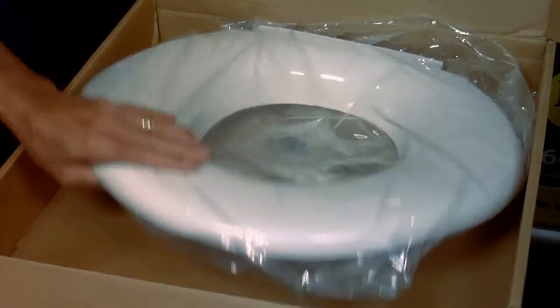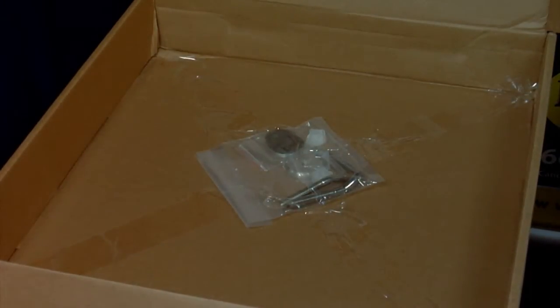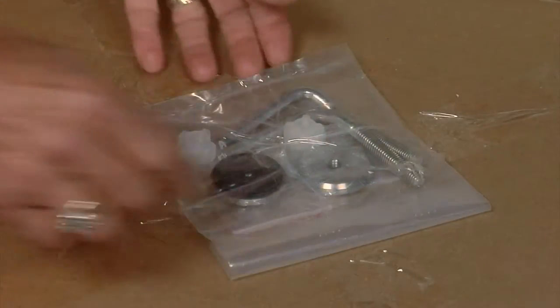When you remove your Big John toilet seat from the box, you'll notice a hardware pack taped to the inside.